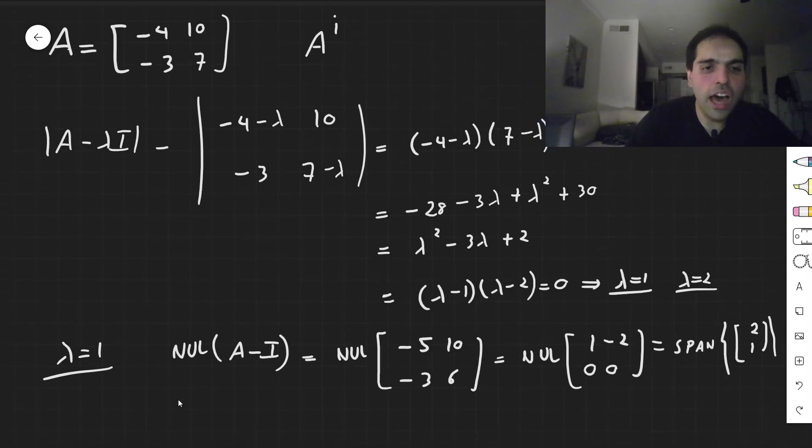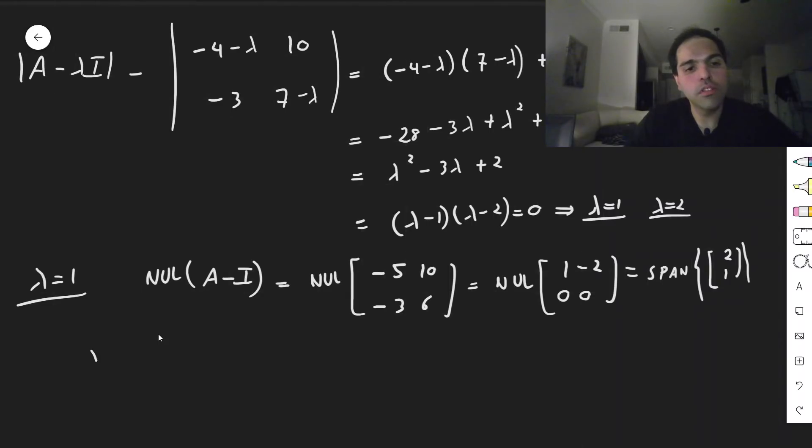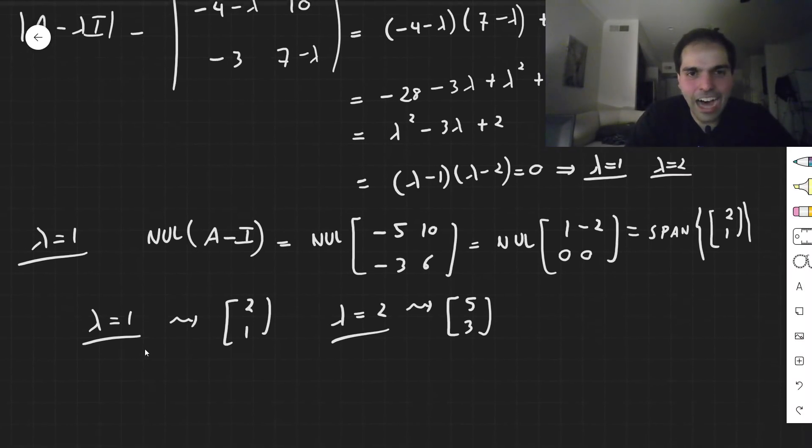So for the eigenvalue 1, you get the vector 2, 1, and for the eigenvalue 2, you get the vector 5, 3. Sorry. I did it with my mind. I did not look at my notes at all. Okay, so what do we have?